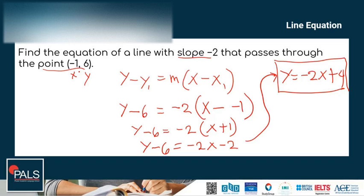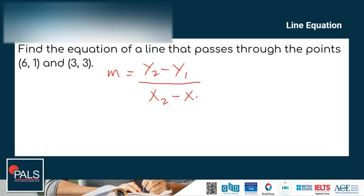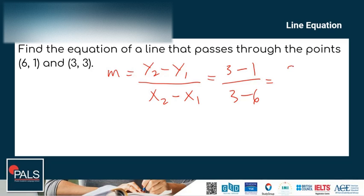Let's proceed to another example. Find the equation of the line that passes through the points (6, 1) and (3, 3). Here, we don't have the slope yet, but we can use the slope formula: m equals (y₂ minus y₁) over (x₂ minus x₁). So m equals (3 minus 1) over (3 minus 6), which gives 2 over negative 3, so the slope is negative 2/3.